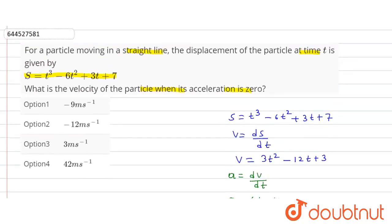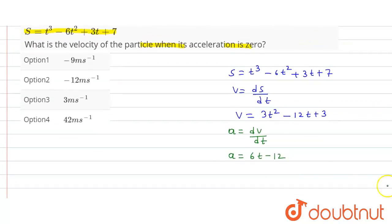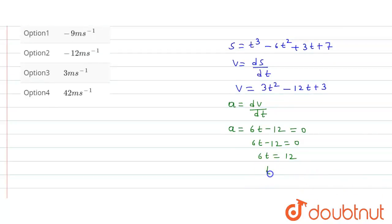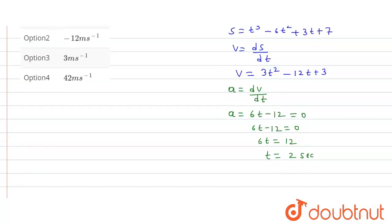Here in the question given, what is the velocity of particle when acceleration is zero? This means acceleration is zero, so 6t minus 12 is equal to zero, means 6t is equal to 12. So from here, time t is equal to 2 seconds.